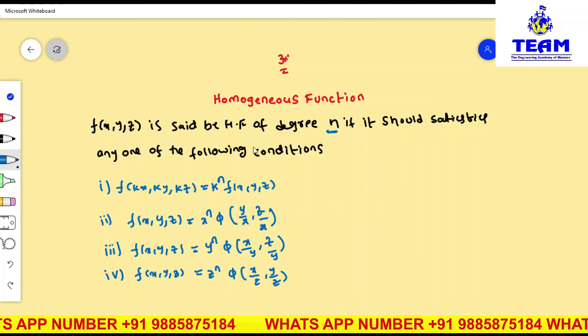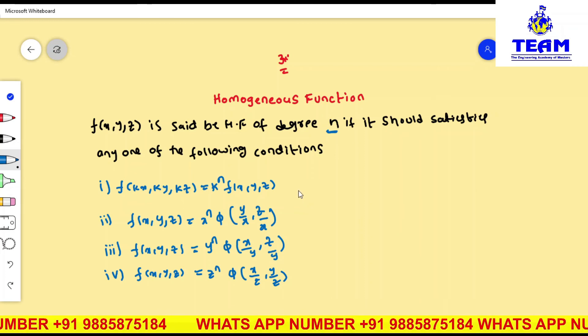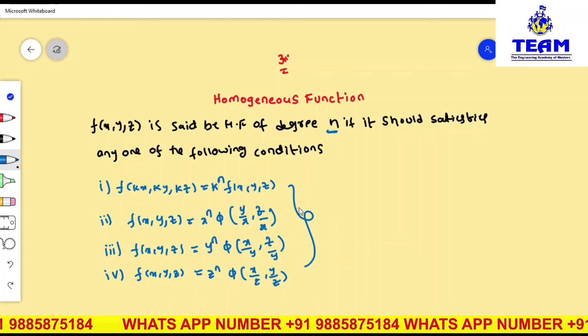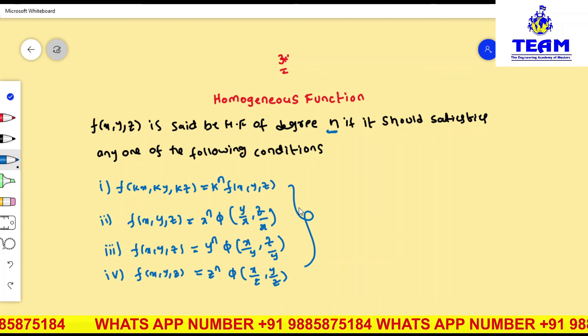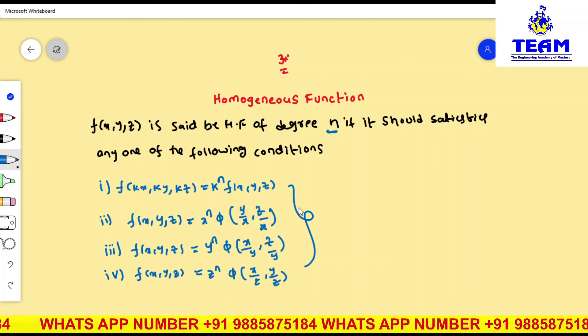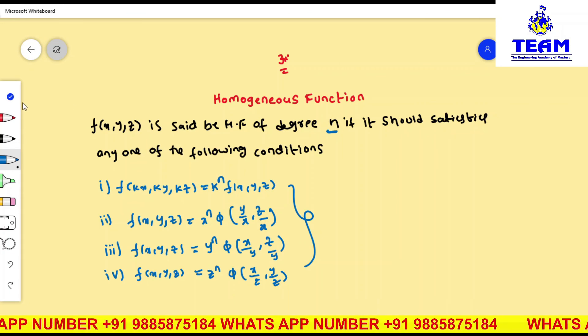So friends, remember if the function is said to be homogeneous of order n or degree n, how to prove any one of the following conditions. Similarly, for two variables also. In the next video we are discussing Euler's theorem and some of the problems on Euler's theorem. Thank you for watching this video.